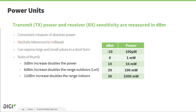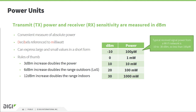A convenient way to measure transmit power and receiver sensitivity is by using dBm as a unit, which stands for decibels referenced to one milliwatt. It uses a logarithmic scale, which is a way to compress measurements and allows you to express large and small values in short form. There are a few rules of thumb: a 3 dBm increase doubles the power; a 6 dBm increase doubles the range outdoors with a free Fresnel zone; and a 12 dBm increase doubles the range indoors.